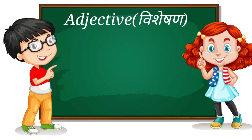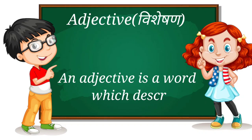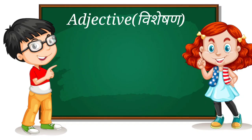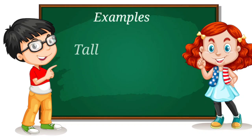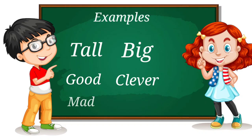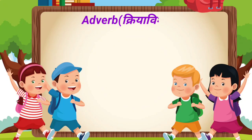The next one is adjective. An adjective is a word which describes a noun or pronoun — it tells us the quality of a noun or pronoun. Examples are: tall, big, good, clever, mad, and brave.